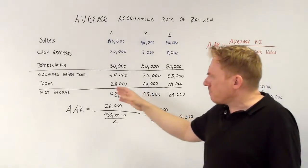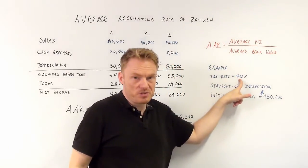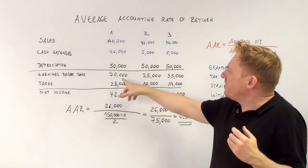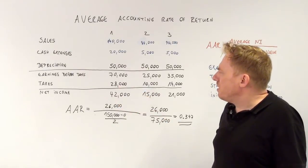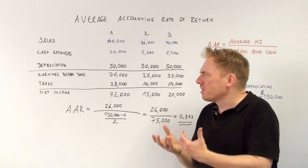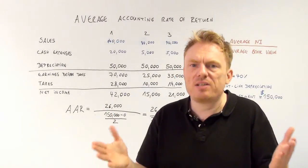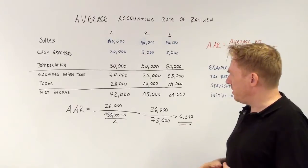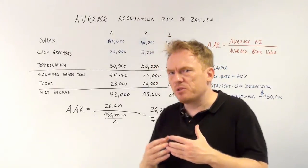Earnings before taxes need to be multiplied by the tax rate. Let there be a tax rate of 40% per year. You multiply earnings before taxes by 40%, so $70,000 multiplied by 0.4 equals taxes of $28,000. Subtracting taxes from earnings before taxes gives net income. Net income is $42,000 in the first year, $15,000 in the second, and $21,000 in the third year.